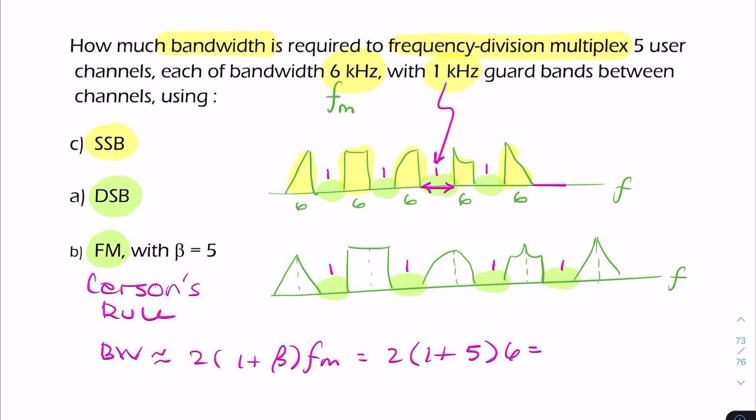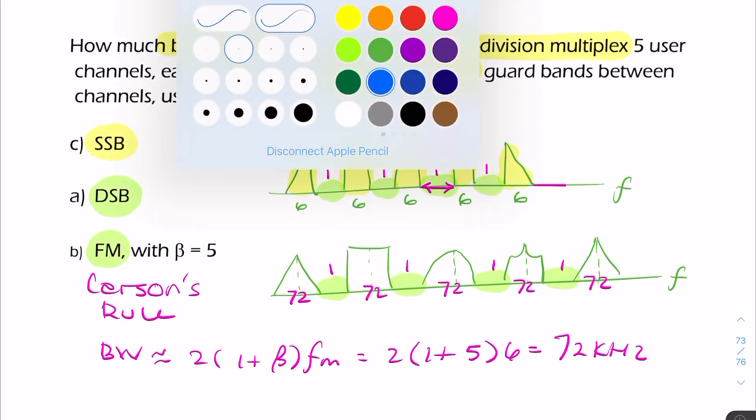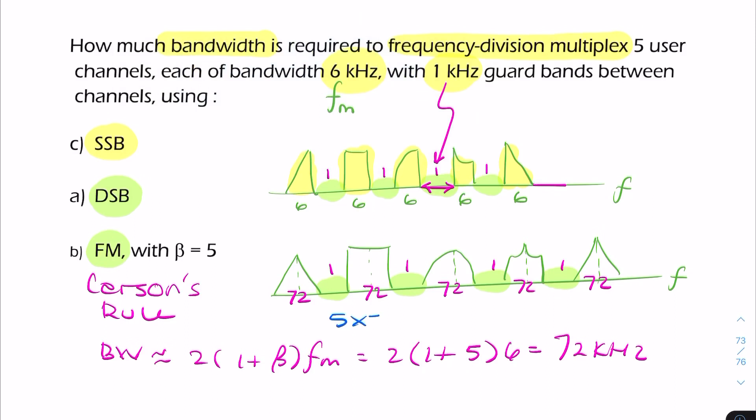Each station will have a bandwidth of 72 kilohertz. The total bandwidth will be 5 times 72 plus 4 times 1, giving you 364 kilohertz—much larger bandwidth than either DSB or SSB. That would be your final answer.